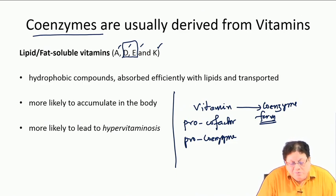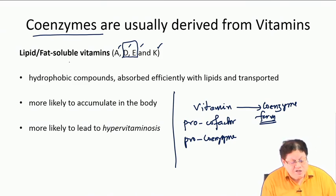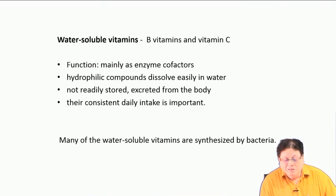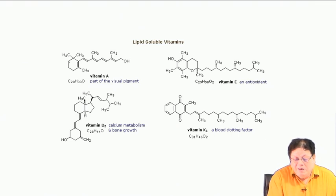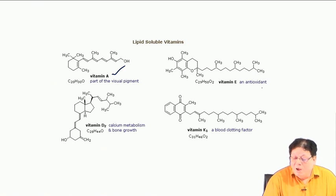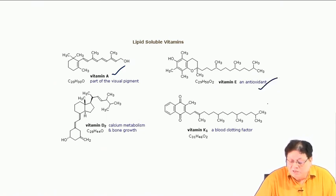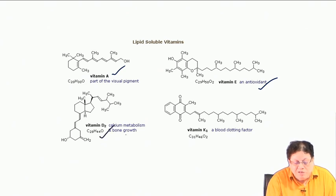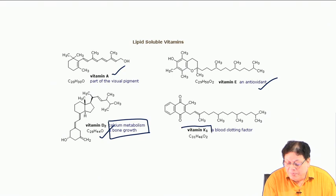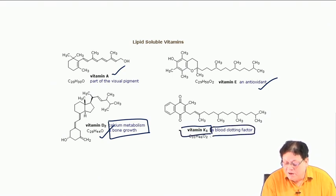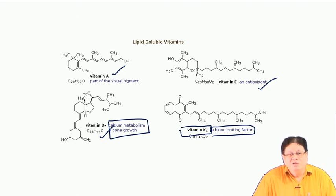A and K are precursors to coenzymes. Because these are lipid-soluble, their structures contain long hydrocarbon chains. Vitamin A is the general structure shown; vitamin E is an antioxidant; vitamin D2 is required for calcium metabolism and bone growth — it is not a cofactor; and vitamin K1 participates in blood clotting.